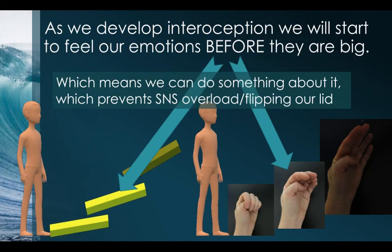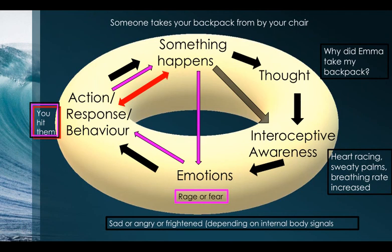As individuals develop their interoception, they start to notice emotions before they're huge — before ninety-nine — and the earlier they notice them, the more they can do something about it. In terms of the hand model, the thinking cap starts to lift, you notice it lifting, do something about it, and bring it back down. For example, if someone takes your backpack, you might think 'why did they take it?' and with developing interoceptive awareness, you notice your heart racing, sweaty palms, increased breathing — which could be fear that you'll never see your backpack again.